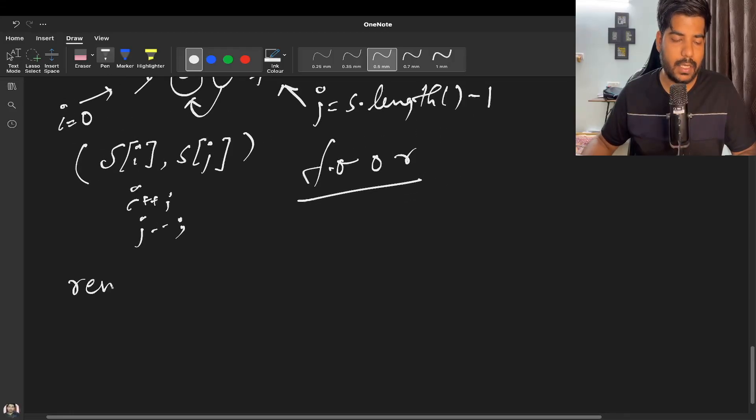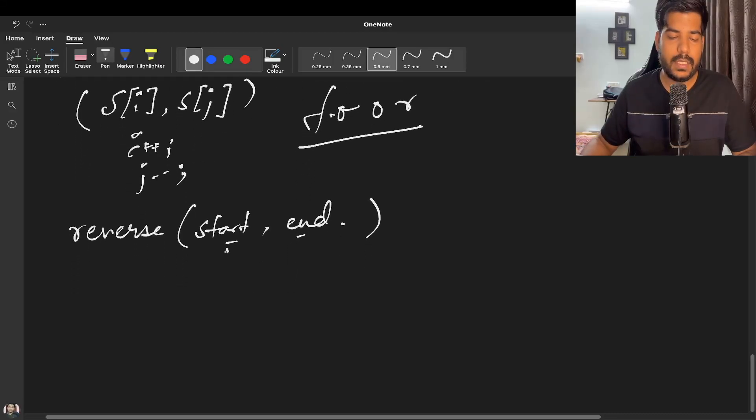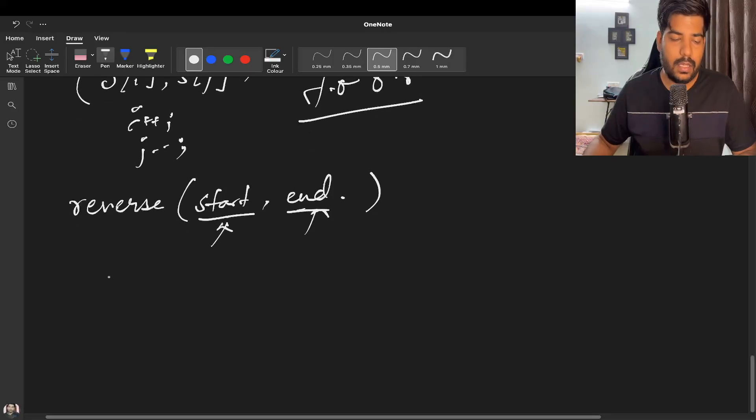Now the third method uses an inbuilt function called reverse. It accepts two parameters: the starting index and the end index, or in C++ STL, we call these iterators - the start iterator and the end iterator. We can pass s.begin, so the iterator will point to the beginning of the string, till s.end.